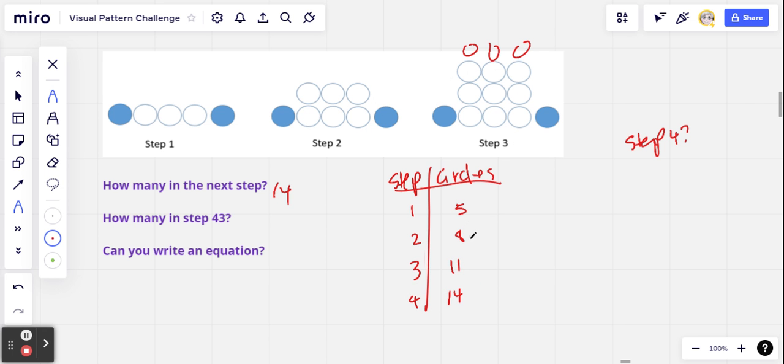And then we can subtract to find the difference between each step. So 8 minus 5 is 3, 11 minus 8 is 3, and 14 minus 11 is 3. So that's a constant for our difference, which means it is linear. But you knew that, right?